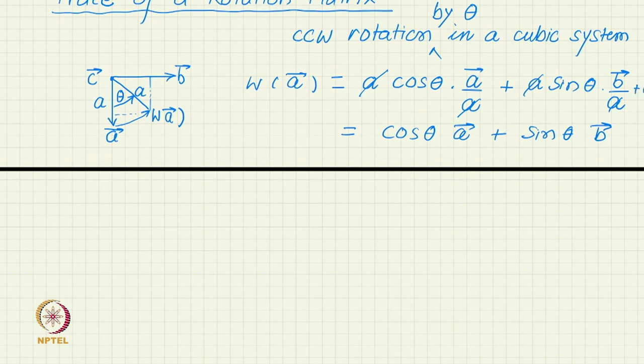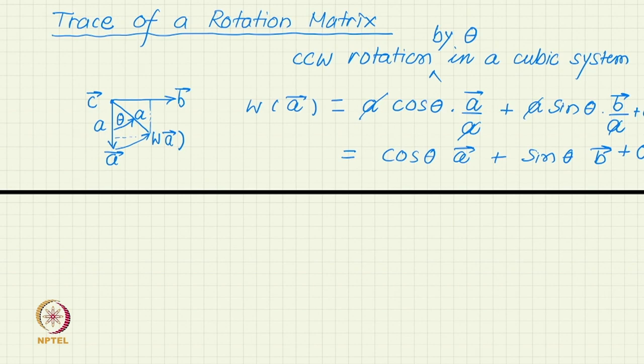And plus let us write three dimensionally, plus 0. The third component is 0 because if it is rotating about the z axis counterclockwise in a cubic system about z axis. Axis has to be specified, only angle specification is not sufficient for rotation in 3D.